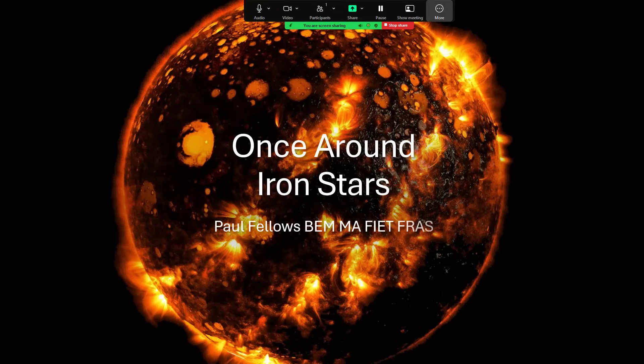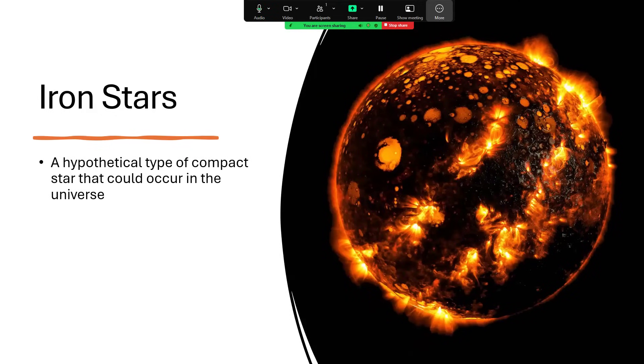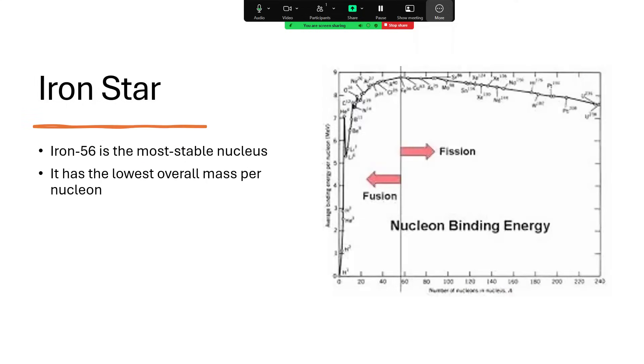This is a story about iron stars that I came across reading a paper by the great Freeman Dyson. It's the idea that eventually a very compact, dense star composed entirely of iron could be formed and become the dominant type of star in the whole universe. The reason for this is that iron...